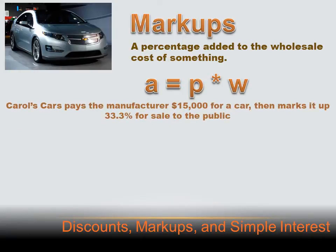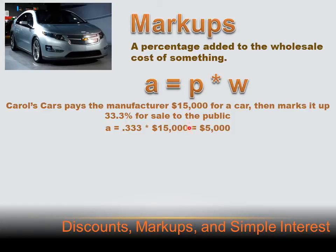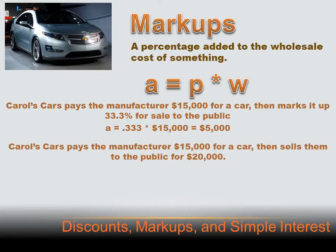Let's look at a problem. Carroll's Cars pays the manufacturer $15,000 for a car and then marks it up 33.3% for sale to the public. Using the percent equation, the markup equals the markup percent, 0.333, times the cost to Carroll, $15,000. One-third times $15,000 equals $5,000. But $5,000 isn't what you pay for the car — that's the markup added to the wholesale cost. So you're going to pay $20,000.